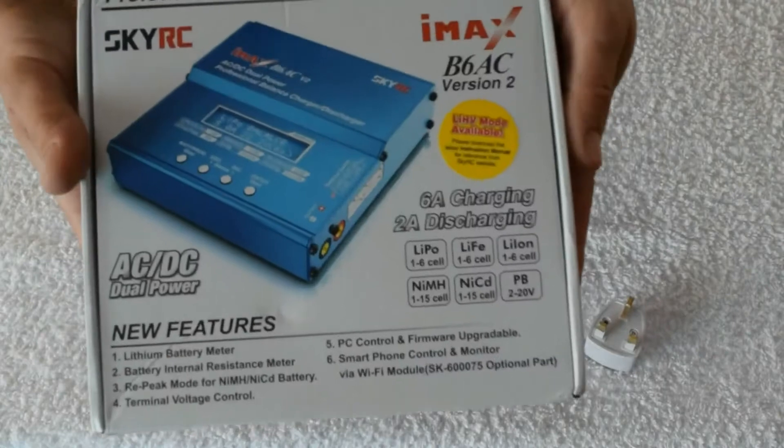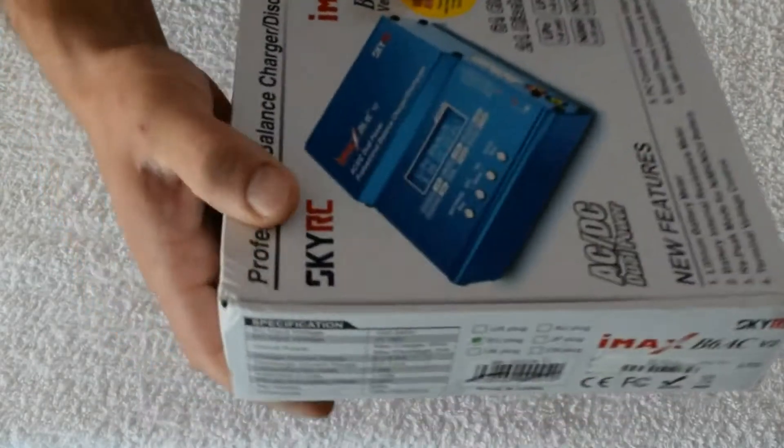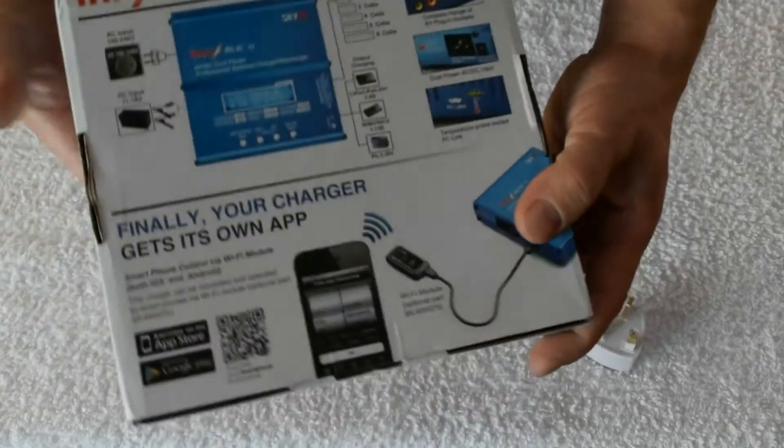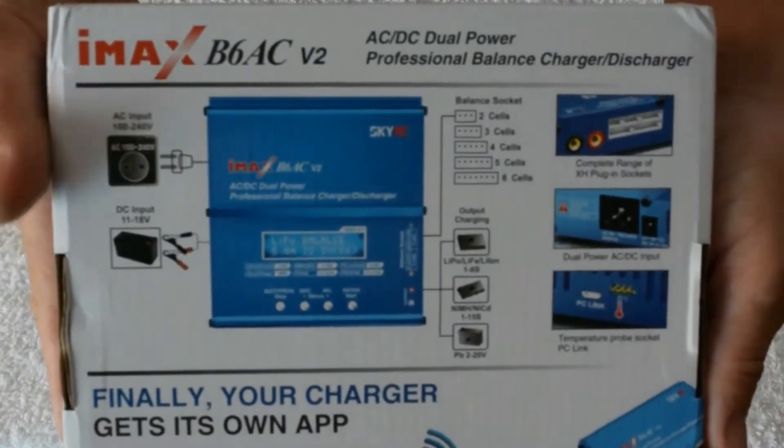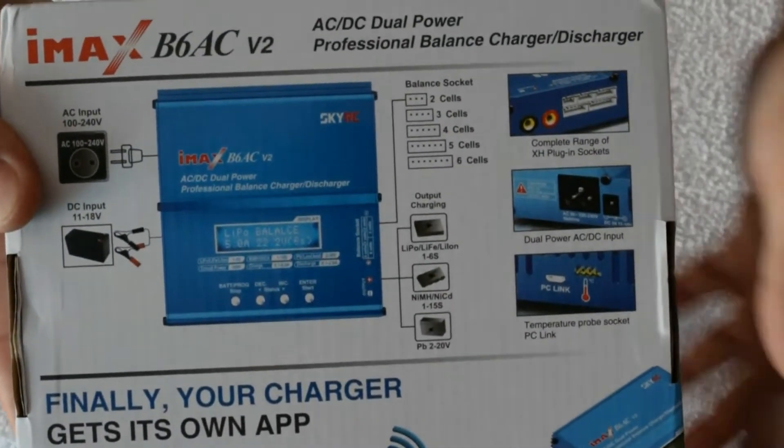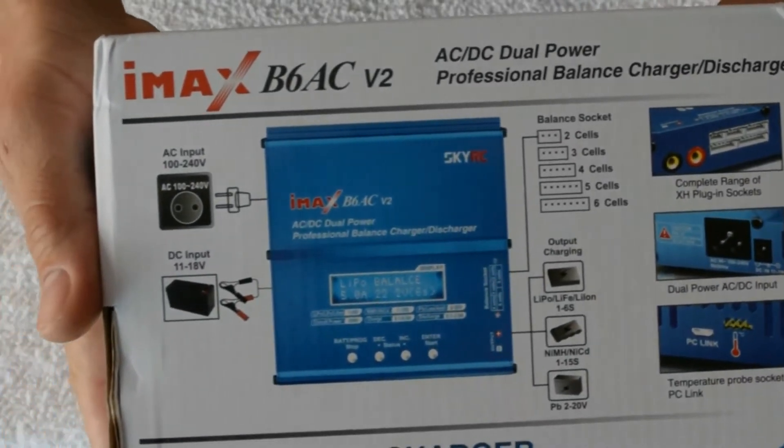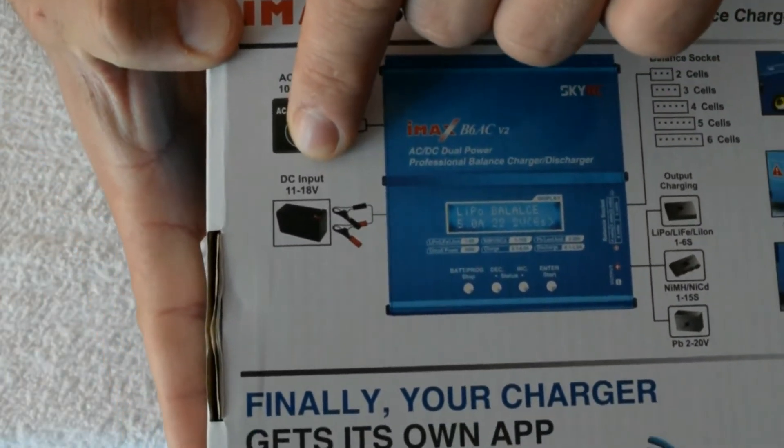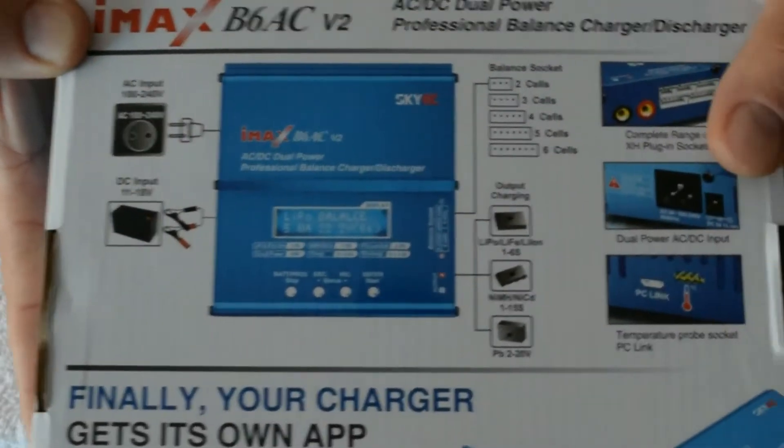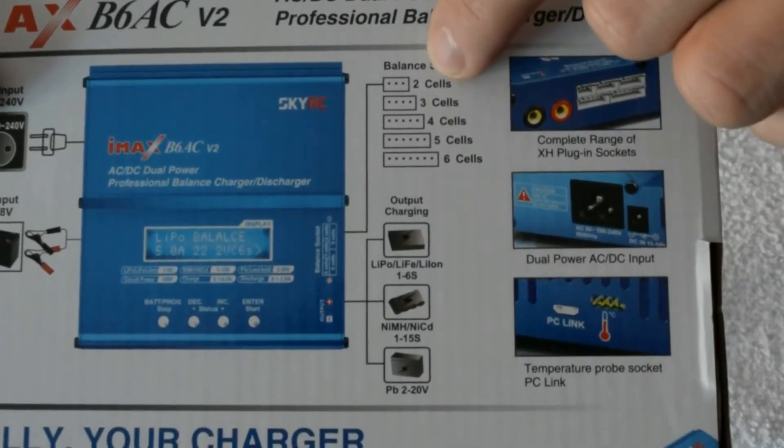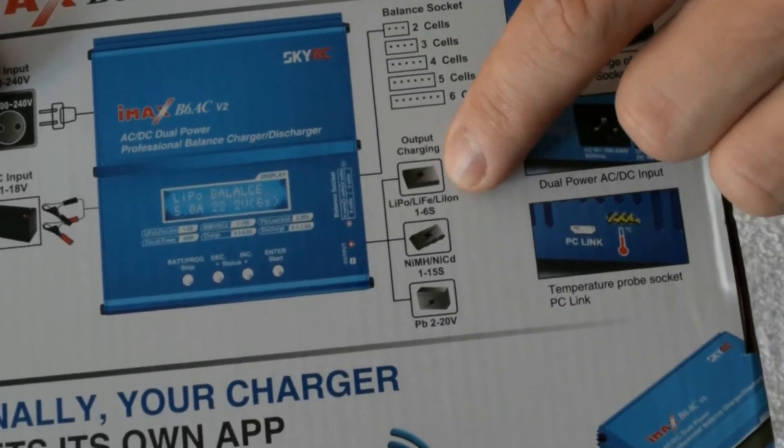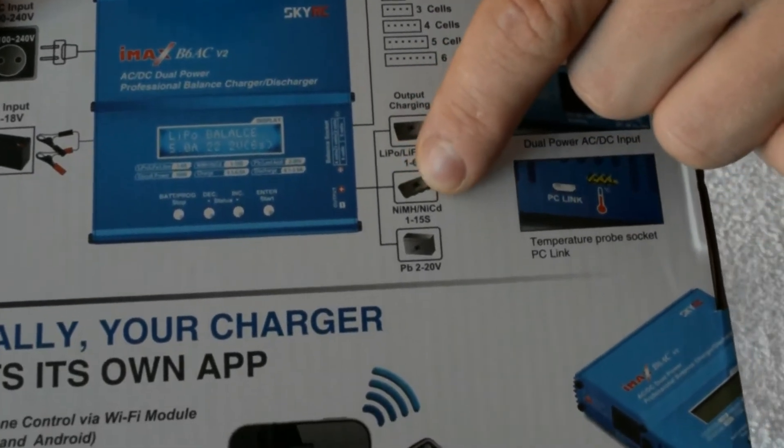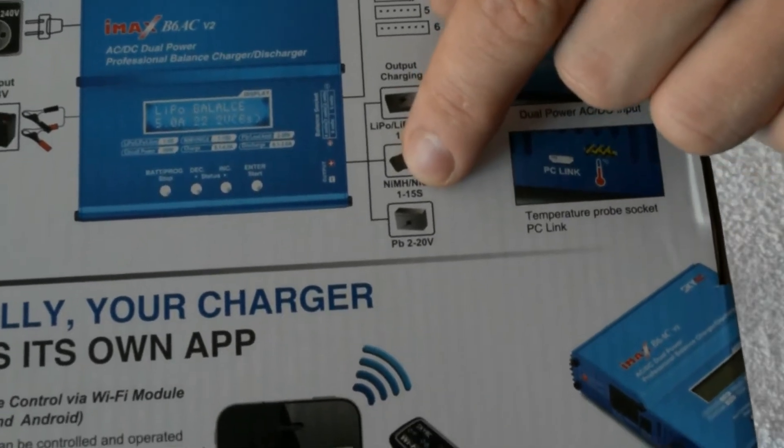This is the balanced charger. Yeah, it's nice, just a little bit worn but I've seen much worse than this. You can use AC, DC, from the battery car, from other sources. From 2 cells until 6 cells. Output charger for LIPO, LiFe, Li-ion until 1 to 6, NiMH and nickel cadmium from 1 until 15. But it's good.